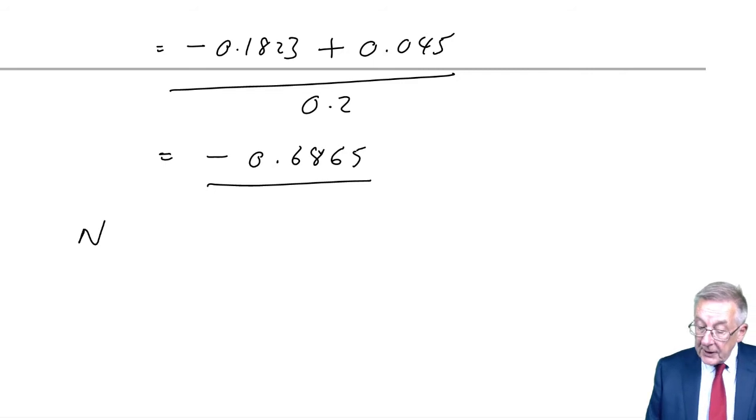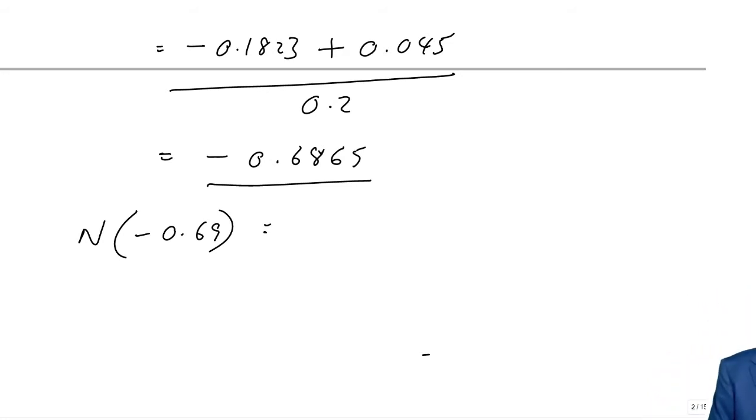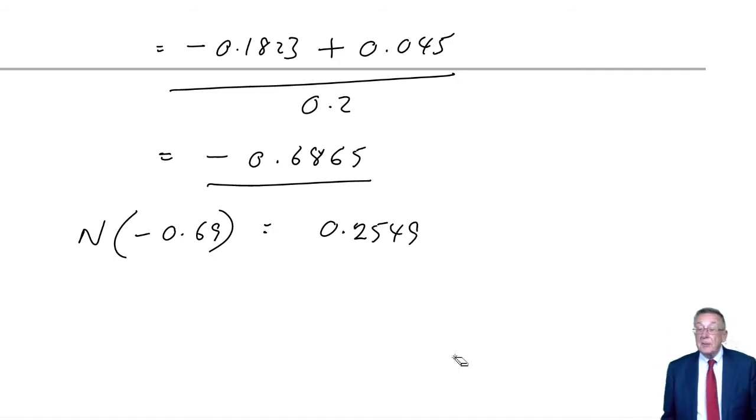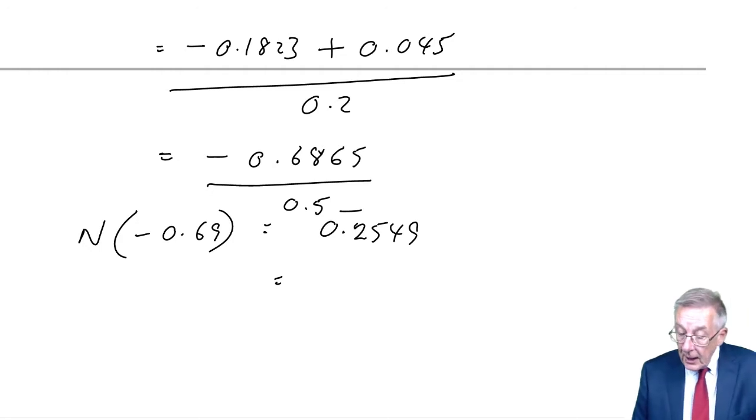I want N(D1), so we want N of to two decimal places minus 0.69. We always look up the positive number first and then adjust. If I look up 0.69, 0.6 down the side, the 0.09 column, I get 0.2549. Because D1 was negative, we subtract the answer we get away from 0.5. So D1 becomes 0.5 minus 0.2549 equals 0.2451.